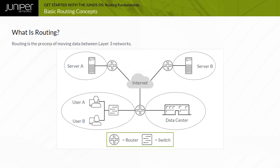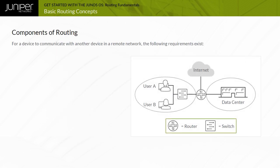Note also that the Internet is a collection of many networks rather than a single network. It is essential to look at the required routing components and how devices running Junos OS make routing decisions. When implementing routing between remote networks, there are two primary considerations: creating an end-to-end communications path and ensuring all Layer 3 devices within the communications path have the required routing information.